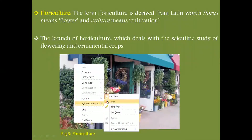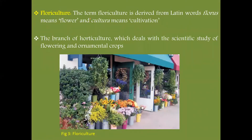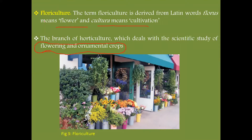Next is floriculture. The term floriculture is derived from Latin words: 'flora,' meaning flower, and 'cultura,' meaning cultivation. It is the branch of horticulture which deals with the scientific study of flowering and ornamental crops. In figure three, different flowers and ornamental crops are given.